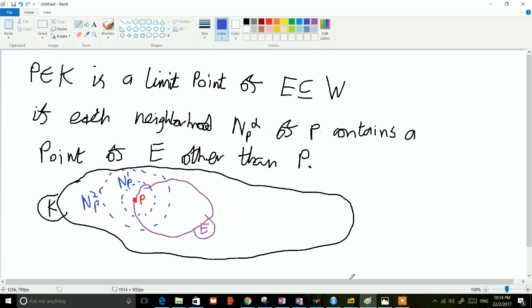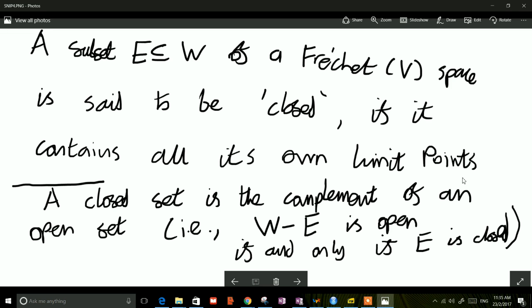This is the definition of limit points, and we can use these to define closed sets and all sorts of other interesting things. Now here's the point: now we've defined limit points, we can define closed sets, and that is really easy. If we have a subset E of a Fréchet V-space W, then we simply say that E is closed if and only if E contains all of its own limit points.